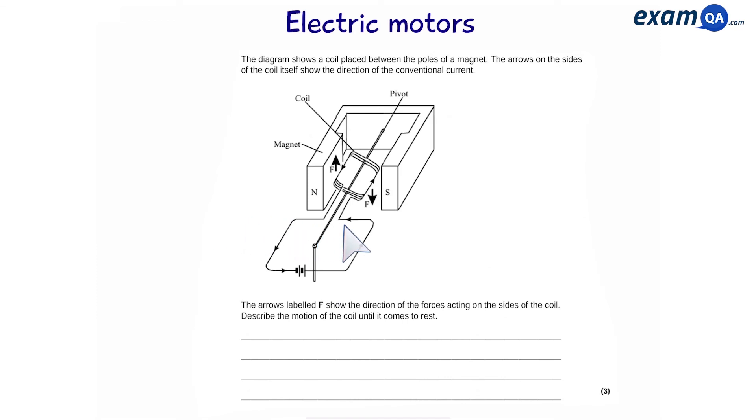This one does not have a split ring commutator. Now we know a split ring commutator is very important as it enables the coil to keep moving round and round. So if you don't have one, such as in this example, what happens?